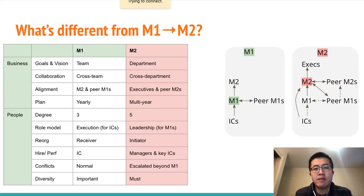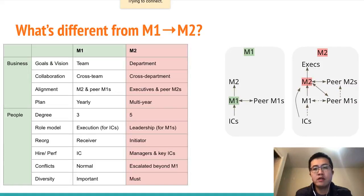An M1 hires and manages performance of individual contributors only, but an M2 needs to hire and manage both reporting managers as well as some key individual contributors. An M1 needs to solve normal interpersonal conflicts, but when they cannot solve it, they will escalate to M2, which is only left with more challenging situations that are beyond M1's control.